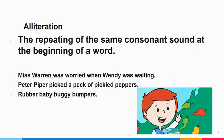When the same consonant sound is repeated at the beginning of words, it's called alliteration. For example, Miss Warren was worried when Wendy was waiting — many of those words start with the same sound. Peter Piper picked a peck of pickled peppers, or rubber baby buggy bumpers are also examples. People often call these tongue twisters because they're hard to say.